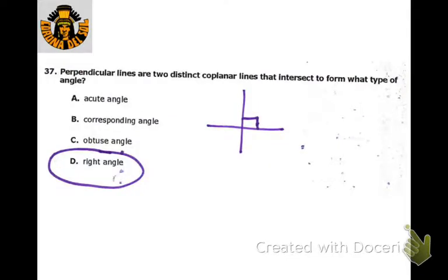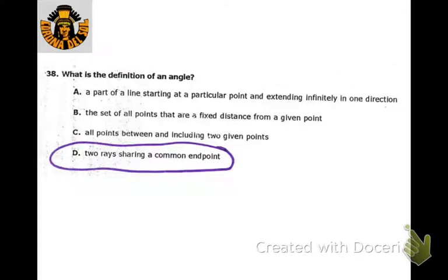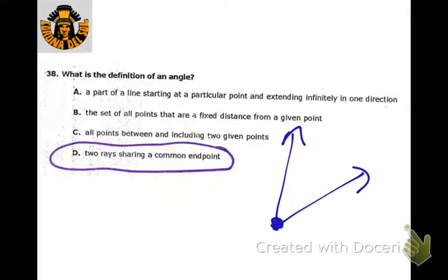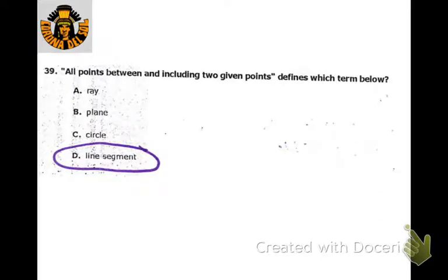Perpendicular lines, when they meet, form a right angle. The definition of an angle is when we have two rays with a common endpoint. A line segment consists of all the points between and including two given endpoints.